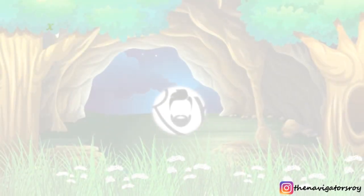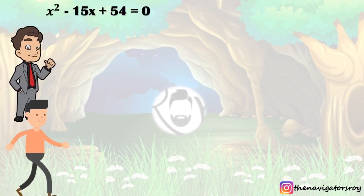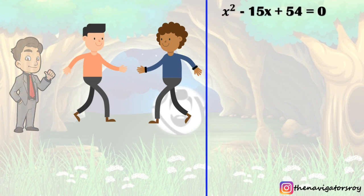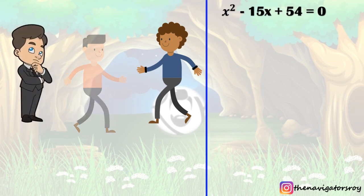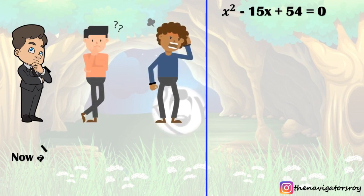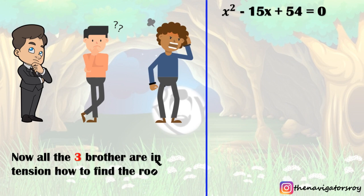Now these three brothers have discussed what the roots are, and they are in tension. They are thinking about what the root is. When they think, the first brother — who is very intelligent — has an idea that we can solve this.